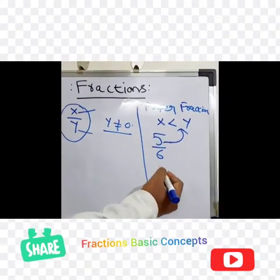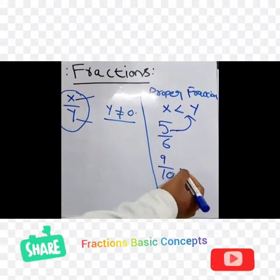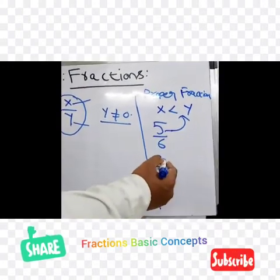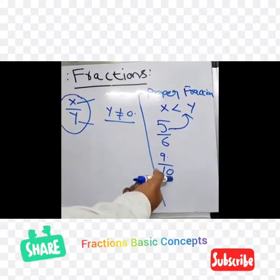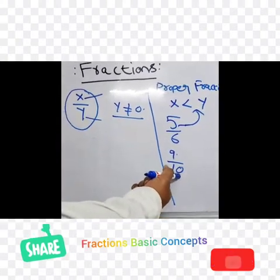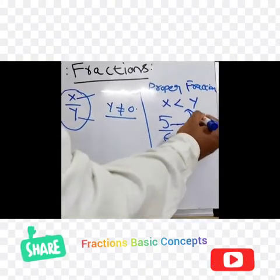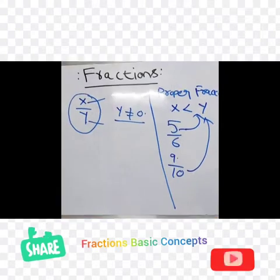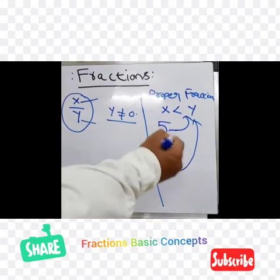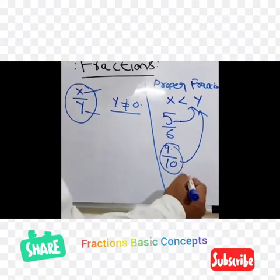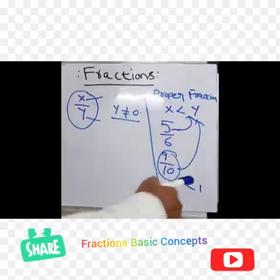Another example: 9 by 10 is also a proper fraction. Here, 9 is the numerator and 10 is the denominator, and since 9 is less than 10, it is also called a proper fraction. There is one more condition: if you take any proper fraction, its value is always less than 1.